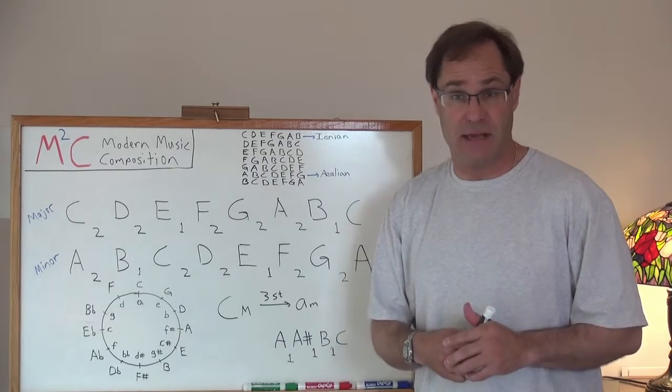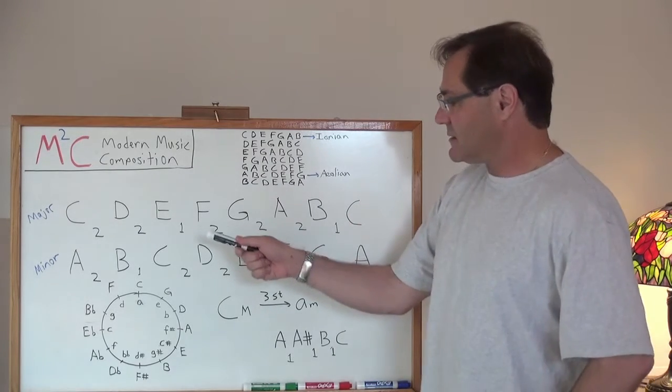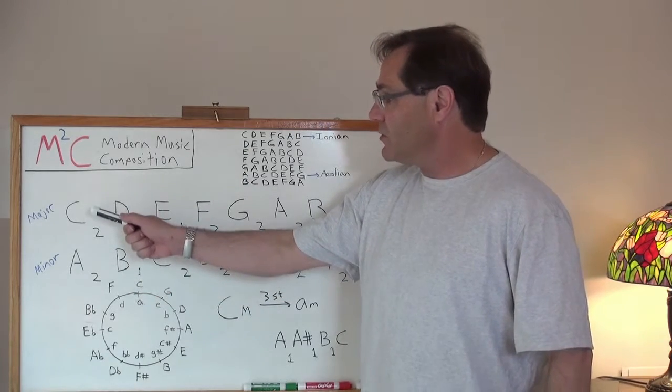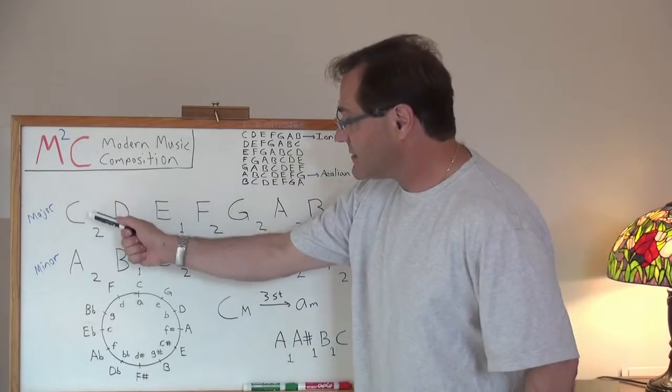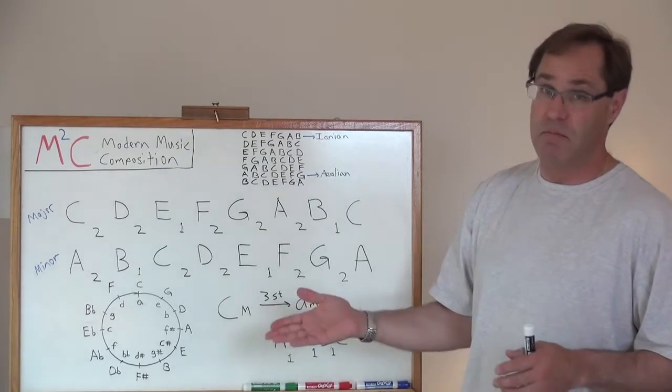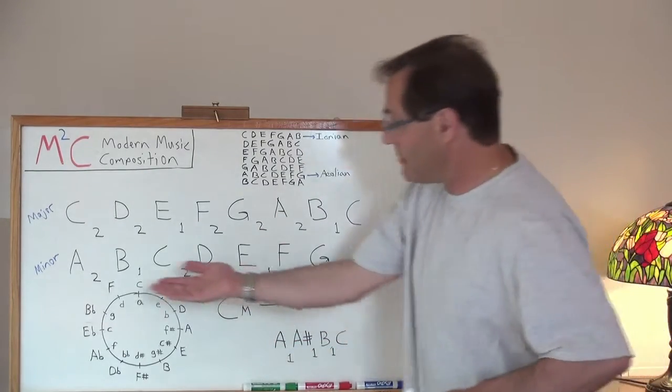That's the minor scale. In this discussion, we're actually going to be using the relative minor to the major scale. In this example, I've got C major, so how do I calculate C's relative minor scale, which happens to be A minor?